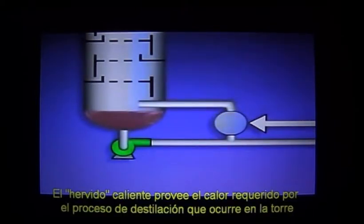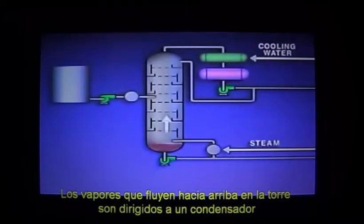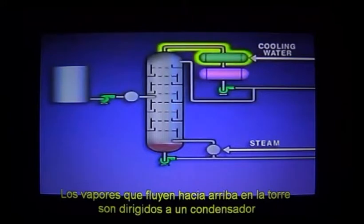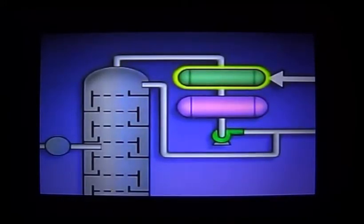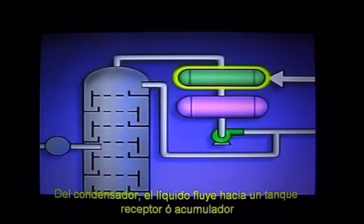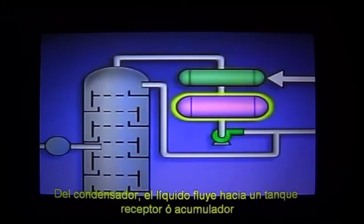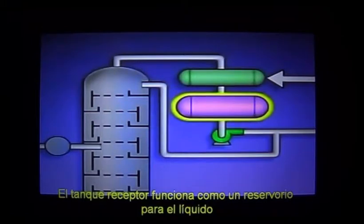The hot boil up provides the heat that's needed for the distillation process to take place in the tower. The vapors that rise up in the tower are routed to a condenser. The purpose of the condenser is to cool and condense the vapors into liquid.